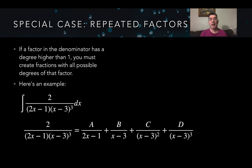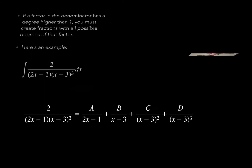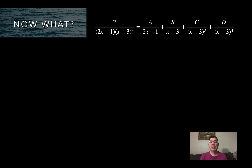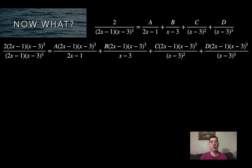For each fraction I put a new constant on top — that's why you see A, B, C, and D. Then I go through the same process and multiply by the original denominator. On the left-hand side, the denominator cancels with everything in parentheses, leaving just 2. On the right-hand side, the 2x minus 1 factors cancel in the first fraction, and the x minus 3 factors reduce the exponents progressively across the remaining fractions.